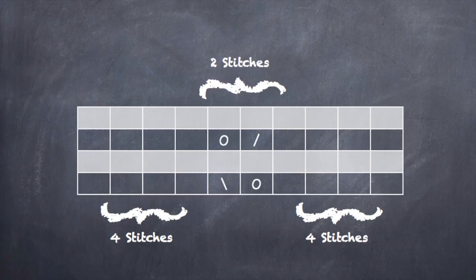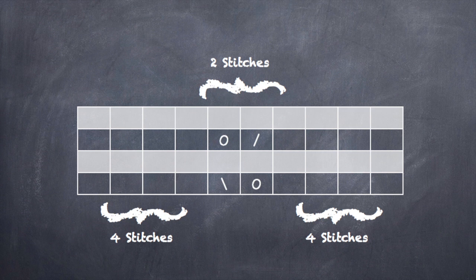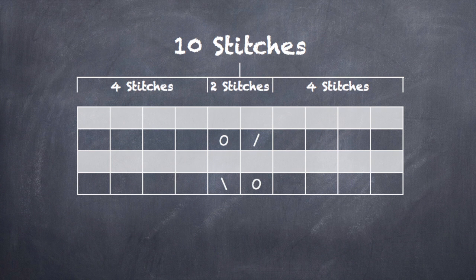And if we were to chart this out, it would look something like this. We have our two stitches in the center and then we have four stitches on either side. So this is actually a 10 stitch repeat.